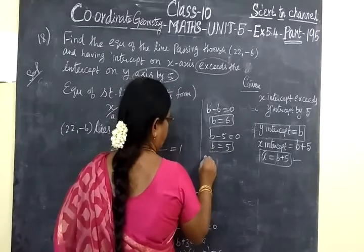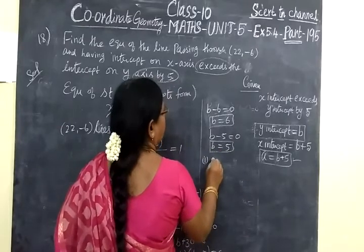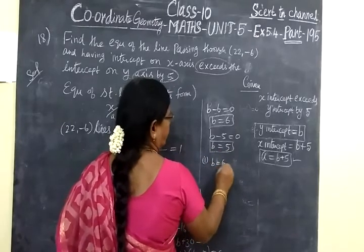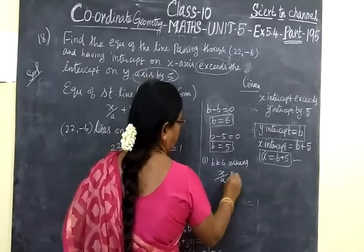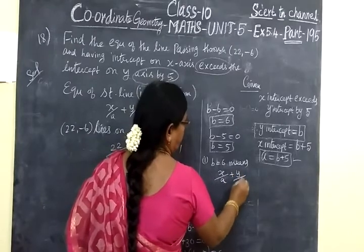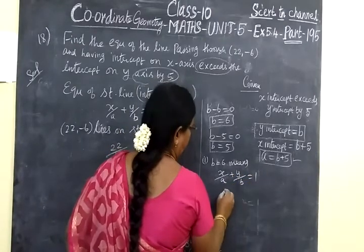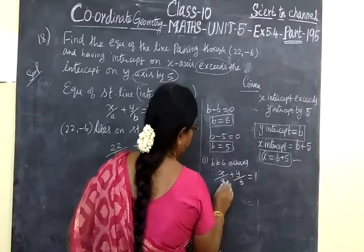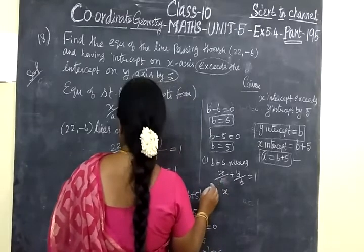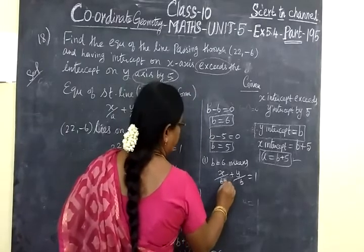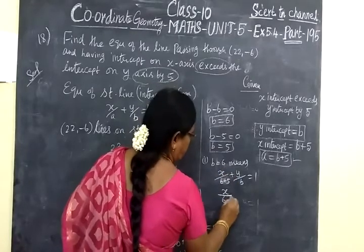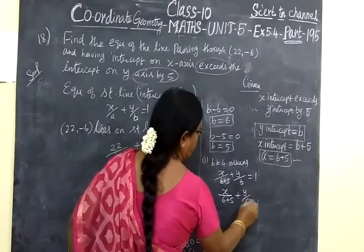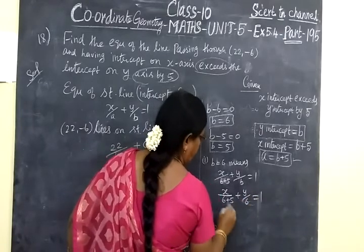Now, the equation of the first line: when B equals 6, we have x/a plus y/b equals 1. With B equals 6, we get 6 plus 5 equals 11, so x/11 plus y/6 equals 1.